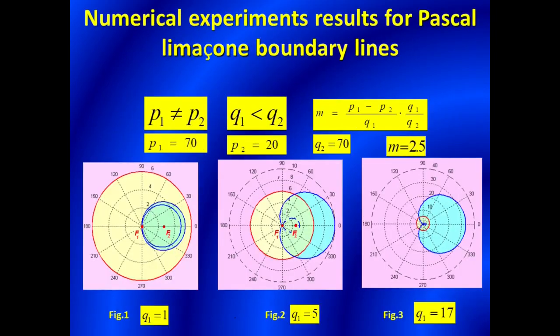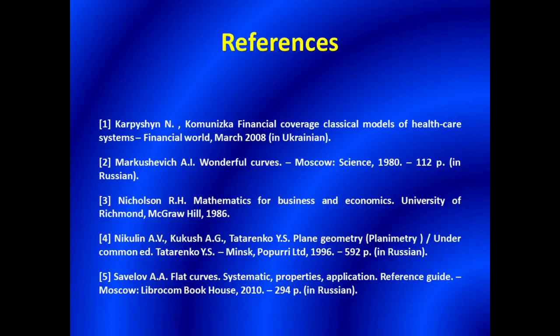Numerical experiments for every case were provided. On the slide, you can see my references. In the research, boundary lines and gravity zones of different types were investigated. This research can be used for efficient logistics of COVID-19 emergency patients' distribution to hospitals.